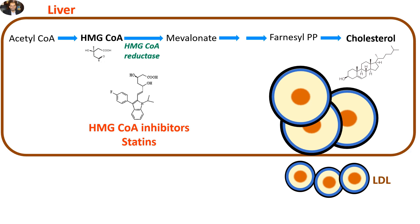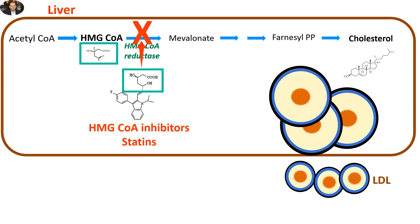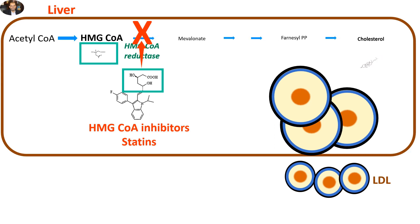HMG-CoA reductase inhibitors, known as statins, are a group of drugs that have similar structures to HMG-CoA molecules. Therefore, they competitively inhibit the activity of HMG-CoA reductase enzyme. As a result, the production line of cholesterol production is largely interrupted.